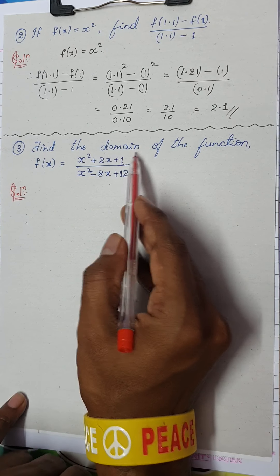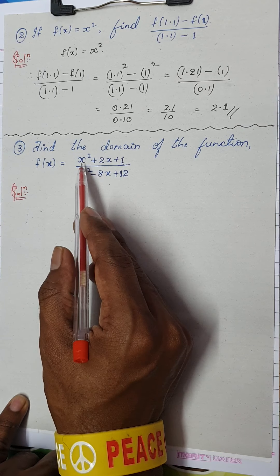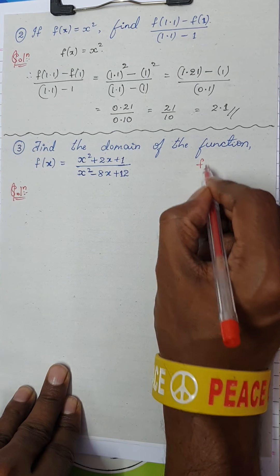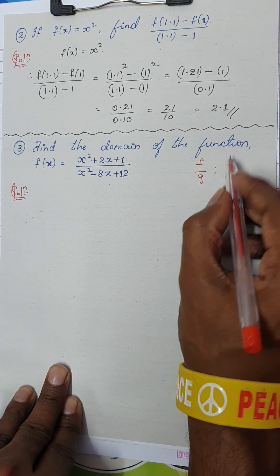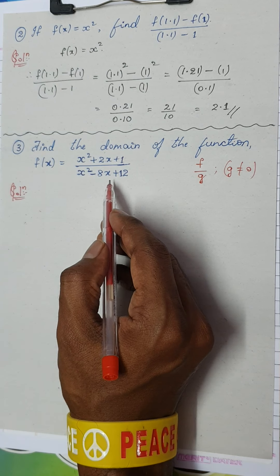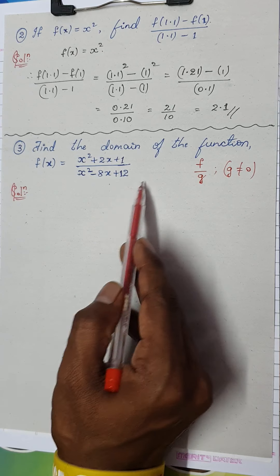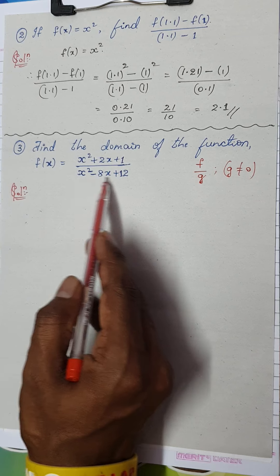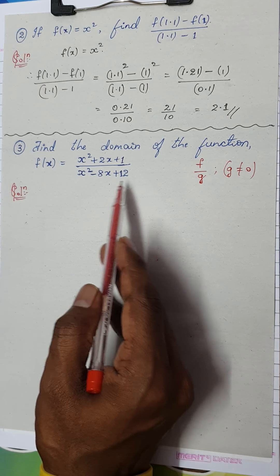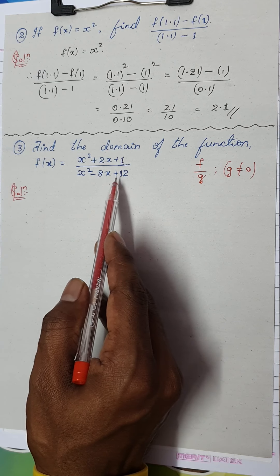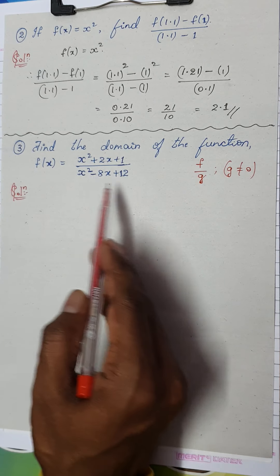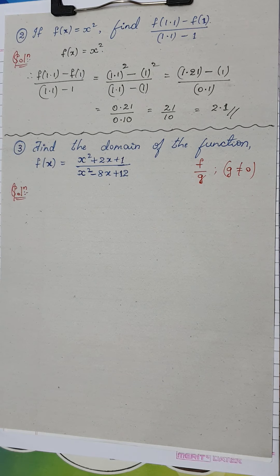Question number 3: find the domain of f(x) = (x² + 2x + 1) / (x² − 8x + 12). This is a rational function. For a rational function f/g, we need g ≠ 0, because if the denominator equals zero the function is undefined. So we set the denominator equal to zero and find those values to exclude from the domain.